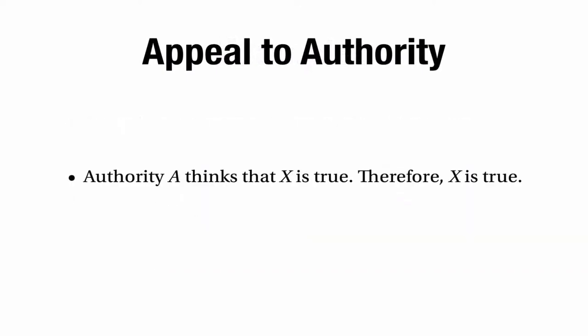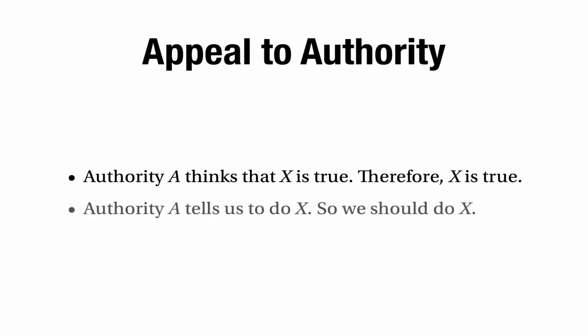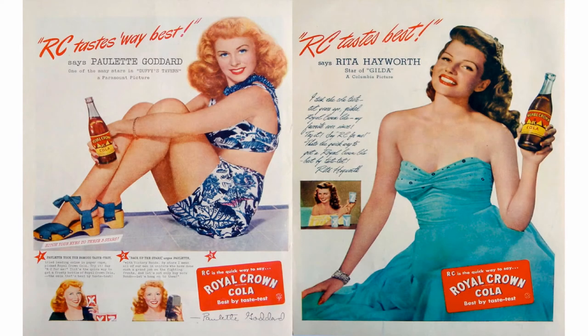Let's move on to our next type of appeal: the appeal to authority. This happens when an author argues that an authority A thinks that X is true, so therefore X is true. Or alternatively, authority A tells us to do X, so therefore we should do X.